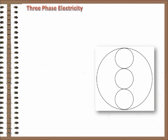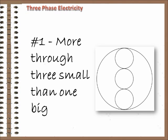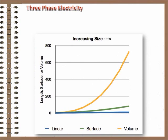Reason number one. We can move more energy through three small wires than through one big one. How's that? Well, it turns out, as objects get bigger, they gain internal volume faster than they gain surface area. It's a physics principle called scaling, which I may do one of these videos on soon.